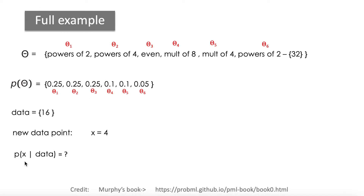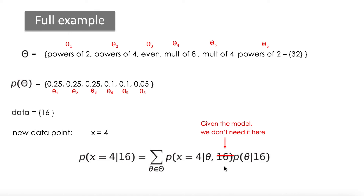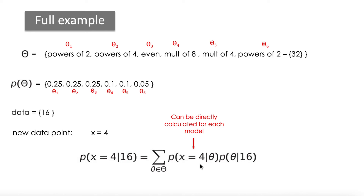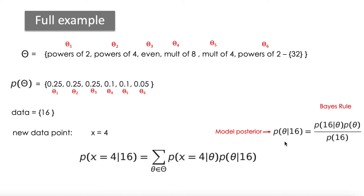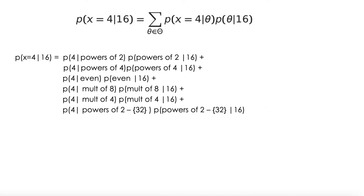If we want to calculate the probability of the new data point 4 given the data, we are going to need to condition on the model and multiply by the posterior of the model — and here is where we resort to the Bayes rule. When we know the model in this term, we don't need all our data because we already have the model, so we can eliminate 16 from this part. The probability of x equal 4 given the model is straightforward because we know the model. Then we need the model posterior — the probability of each possible model given the data we have — which, by the Bayes rule, requires calculating the likelihood, the prior, and the marginal likelihood.